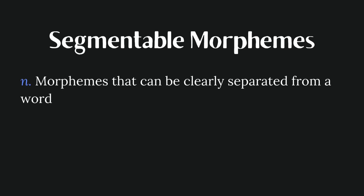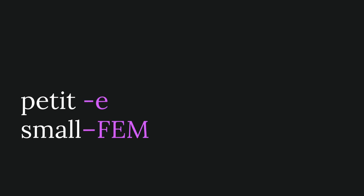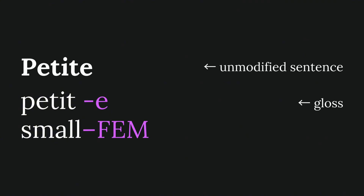A hyphen is used when indicating segmentable morphemes — those that are clearly part of a word. For example, in French, the masculine form of the word for 'small' is petit. To make it go from masculine to feminine, you add an 'e' at the end to get petite. That final 'e' is a segment that conveys grammatical information, so we use a hyphen in the gloss. Convention is to add this hyphen to the example sentence too, though you can also have the original unmodified sentence on top.